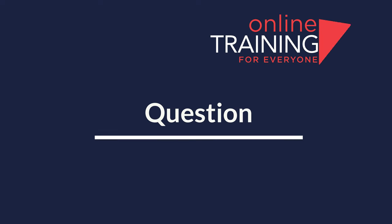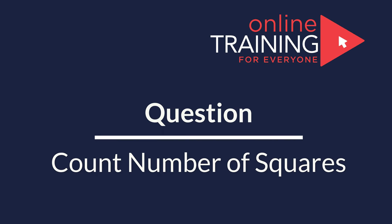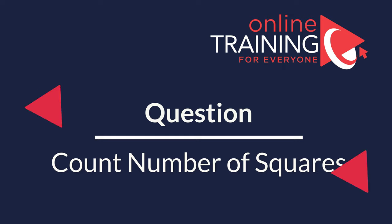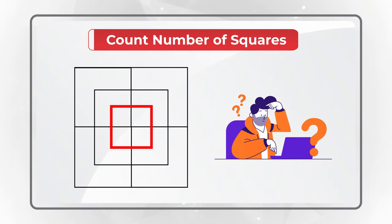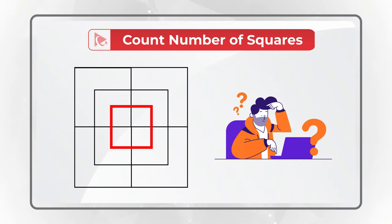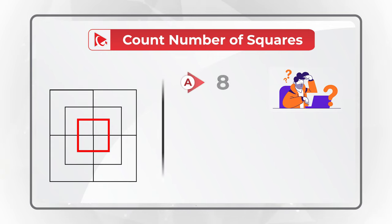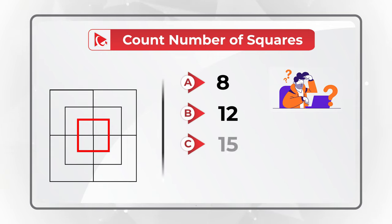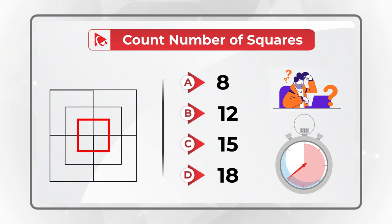Here's one of my favorite questions where you need to count the number of squares presented in the shape. You have four different choices: Choice A, 8; Choice B, 12; Choice C, 15 squares; and Choice D, 18 squares. Take a close look at the picture to see if you can come up with the right choice.